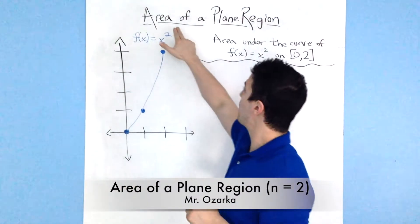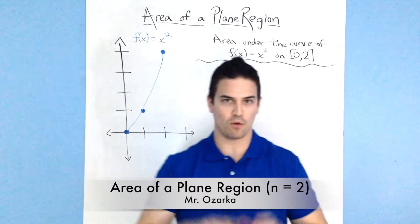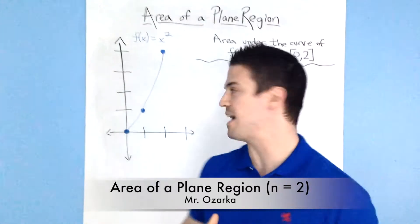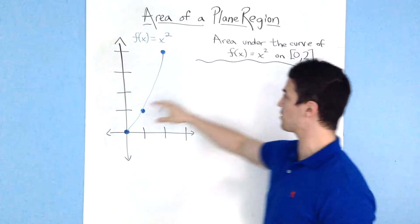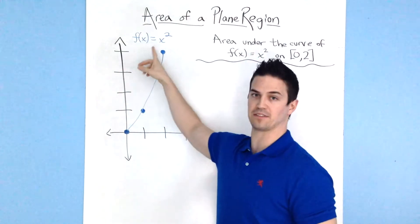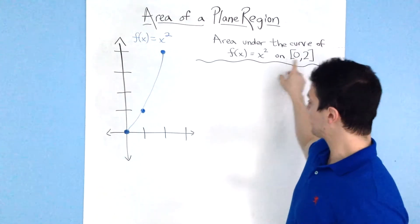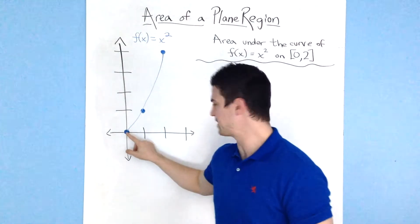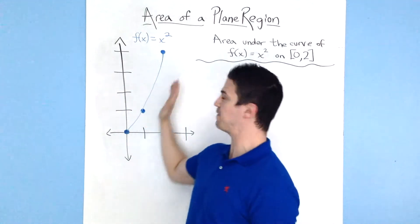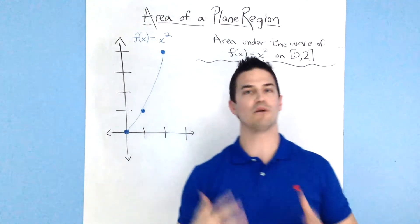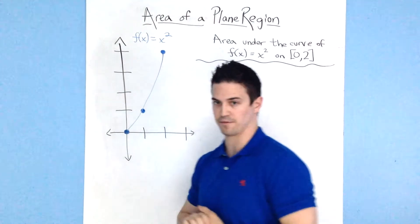This is going to be a video about area of a plane region. I'm going to try to find the area under this curve, f of x equals x squared, on the closed interval from 0 to 2. So I'm going to try to figure out how to find the area underneath this curve.